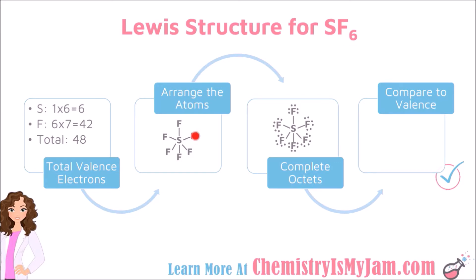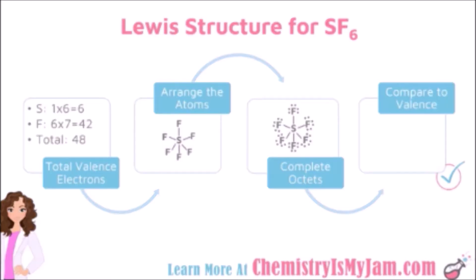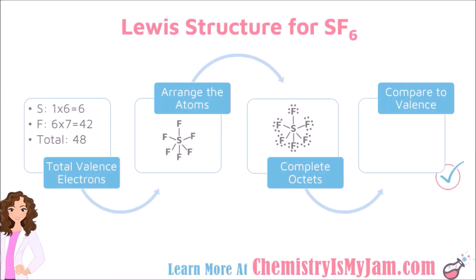The next step is to complete the octets. So, each of these fluorines started with 2 electrons. 6 more were added to each fluorine. Sulfur started with 2, 4, 6, 8, 10, 12 electrons. But that's okay. Check the periodic table. Find sulfur. Sulfur is in period 3 or below. So, it is okay for it to have an expanded octet. It is okay for sulfur to have more than 8 electrons.